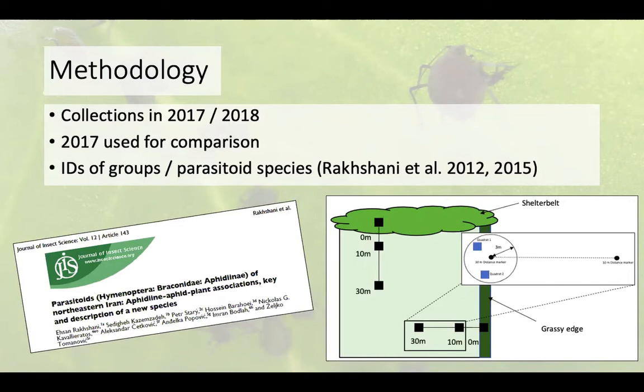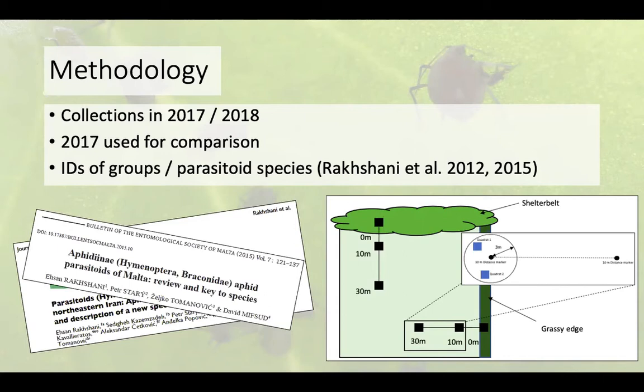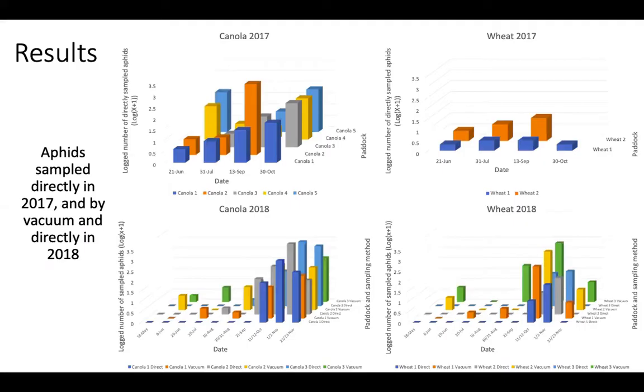Everything was taken back to the lab to identify the different groups — looking at aphids, including alates (winged aphids) and apterae (unwinged aphids), different predator groups, and taking parasitoids to species level. I'd like to draw attention to the fact that the keys I used to identify these parasitoids were both by Rakshani — one from Iran and the other from Malta.